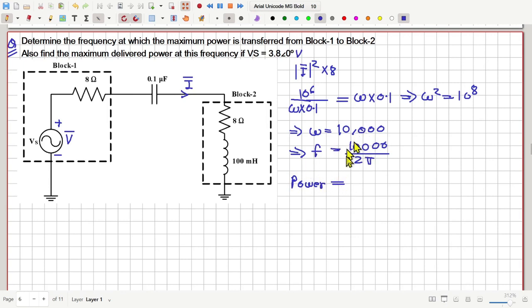Notice that at this particular frequency that is under resonance, the reactance of this capacitor and the reactance of this inductor, they will cancel each other. So, how much will be this current? This current will be this voltage V divided by 8 plus 8, 16 ohm resistance.